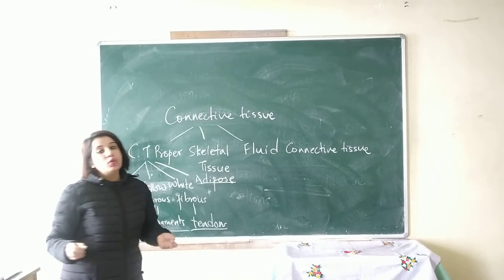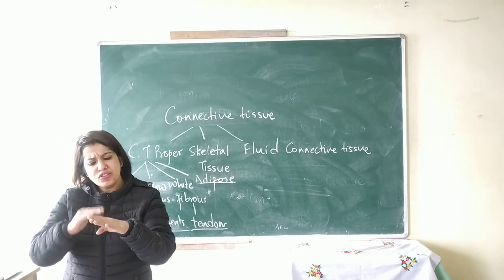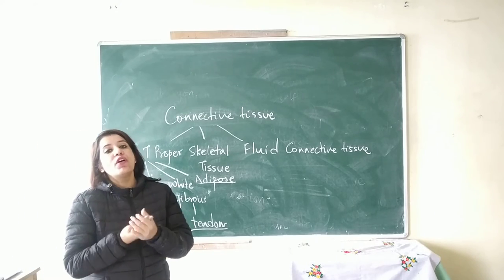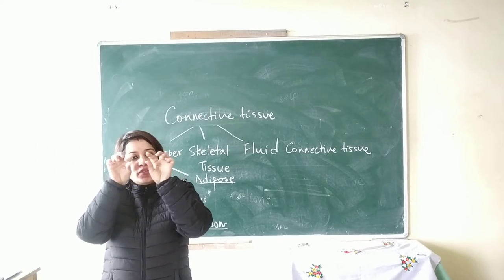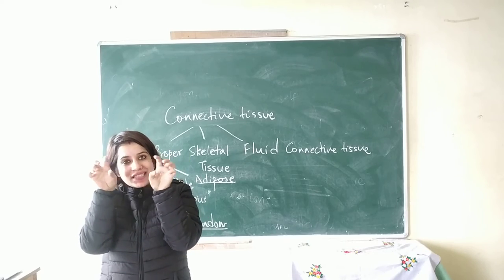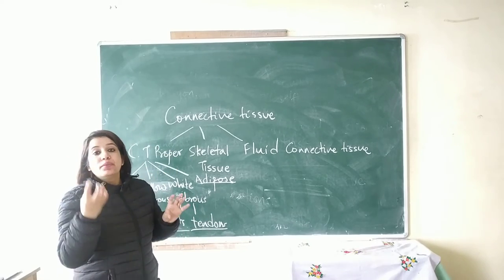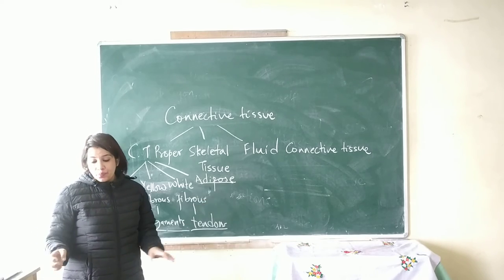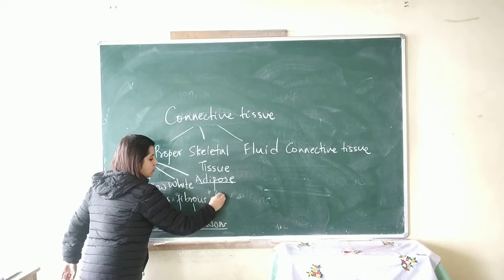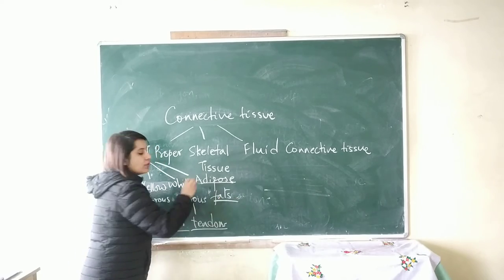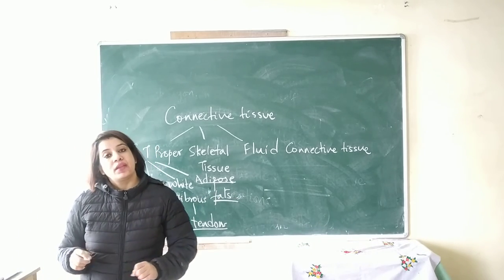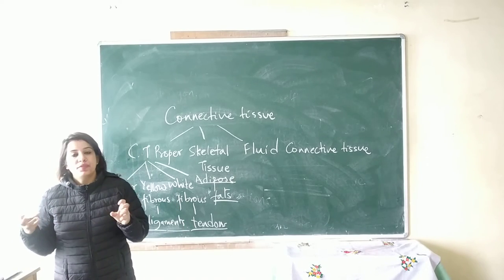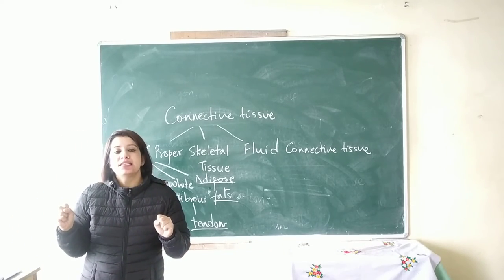The last type of connective tissue proper is the adipose tissue, which is also found below your skin. If you are non-vegetarian, when you eat meat, you see that white portion under the skin — that is the adipose tissue. The adipose tissue stores energy in the form of fats and keeps our body warm by maintaining our body temperature.